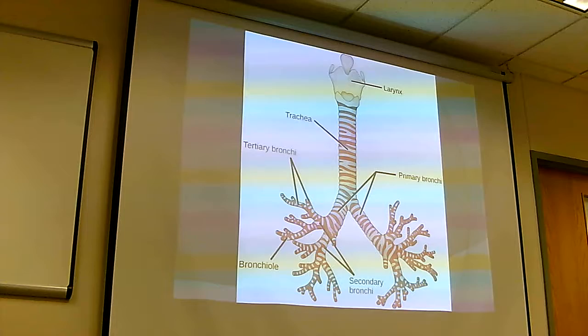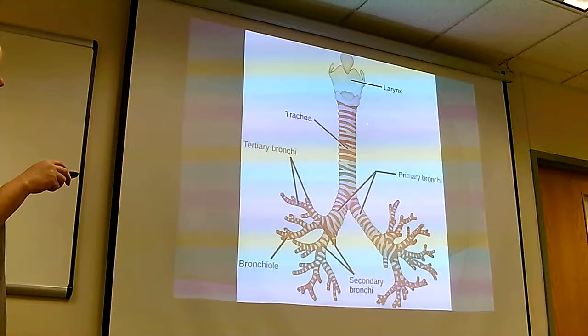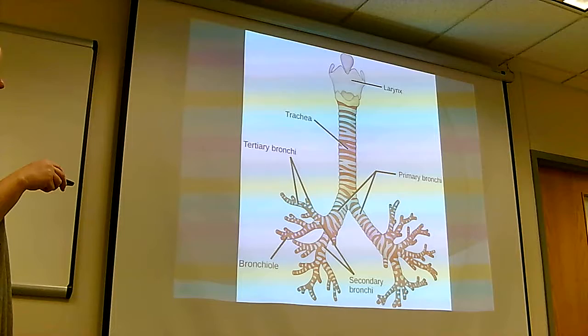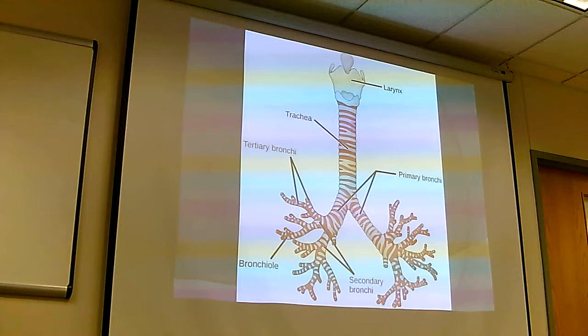Here's more on the lower respiratory tract terminology. There's the trachea, then the primary bronchi, and every time it branches it goes to secondary bronchi, tertiary bronchi, and so on. Pulmonologists who are blocking patients have specific names for all these branches going down to the tertiary level and beyond.